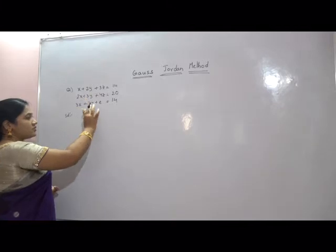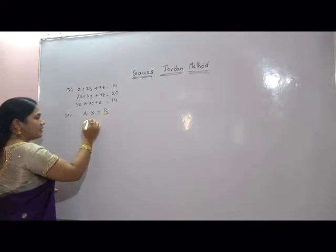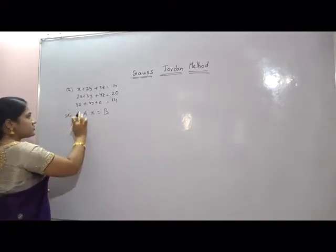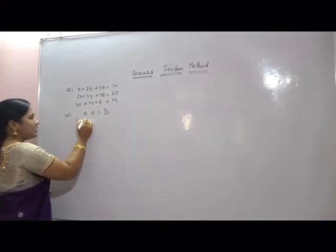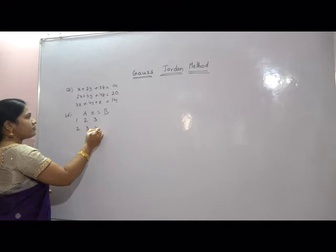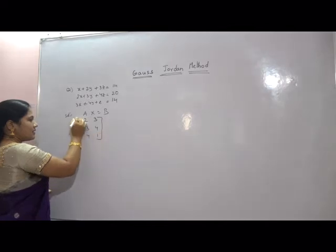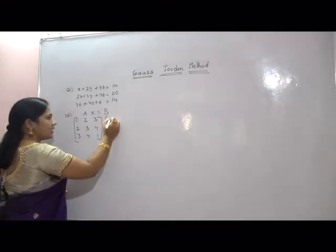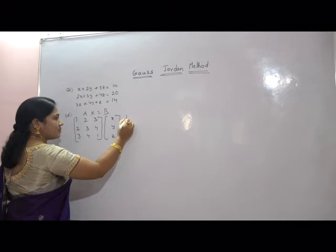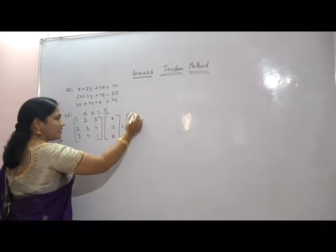First, write the given equations in matrix form AX = B, where A is the coefficient matrix, X is the unknown matrix, and B is the constant matrix. The coefficient matrix has rows [1, 2, 3], [2, 3, 4], and [3, 4, 1]. The unknown matrix contains x, y, z and the constant matrix contains 14, 20, and 14.